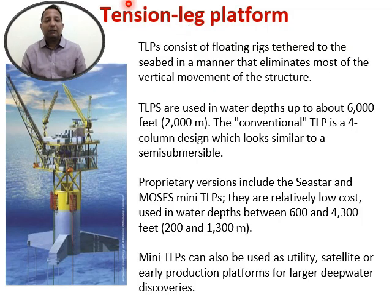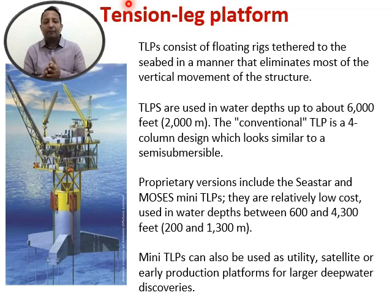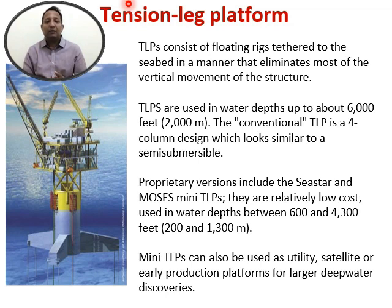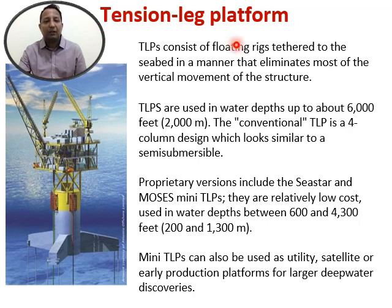This is a Tension Leg Platform, which is one of the commonly used types of platforms in the industry. It can reach water depths of up to 2000 meters. The structure looks somewhat similar to a semi-submersible but is different. It eliminates most of the vertical movement of the structure — the legs are triangular in shape, which helps with stability. A lot of design considerations go into tension leg platforms.